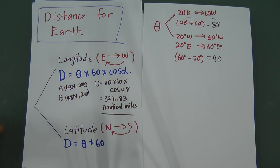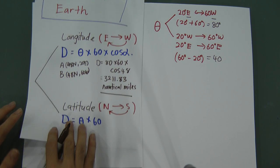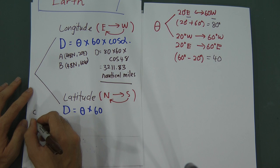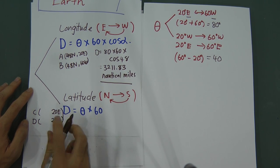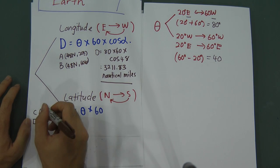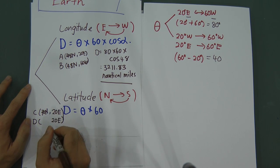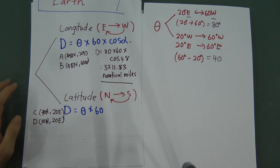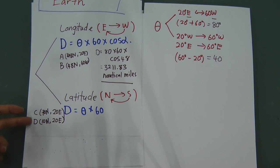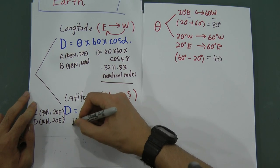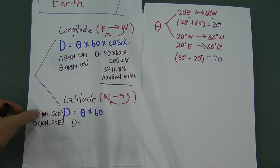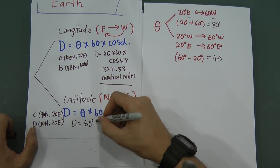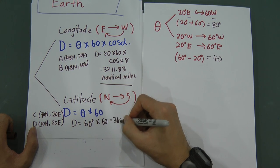Nautical miles — remember I said nautical miles is something like km, it's a very important unit for Earth. Alpha is the latitude that both points share. Now for latitude it's very easy. Let's say we have Location C and D, both also at 20E. So they are flying on latitude. This one is 70 North and this one is 10 North. Both are North, so you use 70 minus 10 — angle is 60. Distance equals 60 multiplied by 60, therefore the answer is 3600 nautical miles.